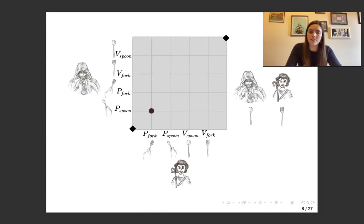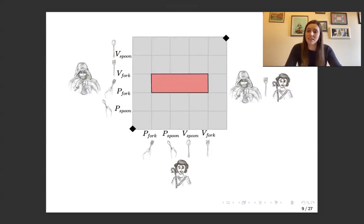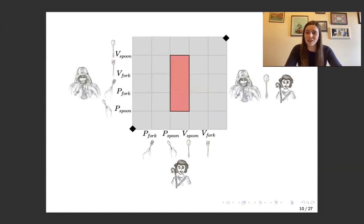Each point on the board is going to describe what both Santiago and the alchemist are doing. So at this point, the alchemist is picking up the spoon and Santiago's picking up the fork. We see in this red region here, this is where both the alchemist and Santiago have picked up the fork, but this is an illegal move in the game. So this region here is forbidden. And we have another forbidden region, and this is where both the alchemist and Santiago have picked up the spoon.